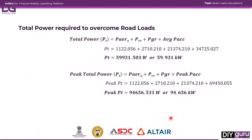The total power required to overcome all road loads is simply the sum of all the individual powers calculated. Putting in the values, the total average power is 59,931 watts or 59.93 kilowatts. The peak total power required is approximately 94.65 kilowatts.